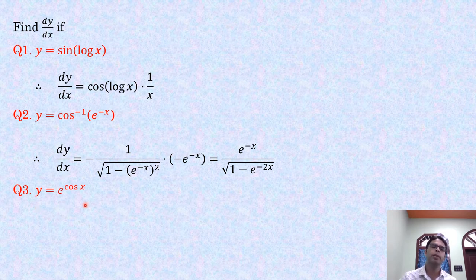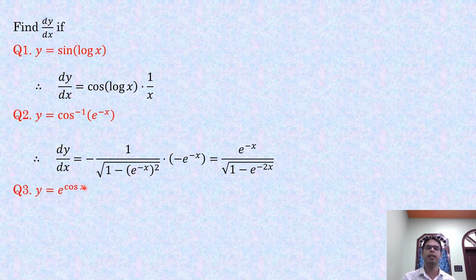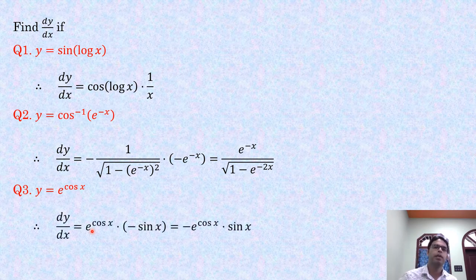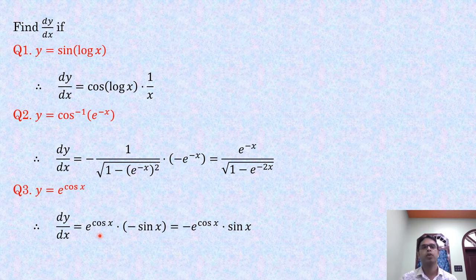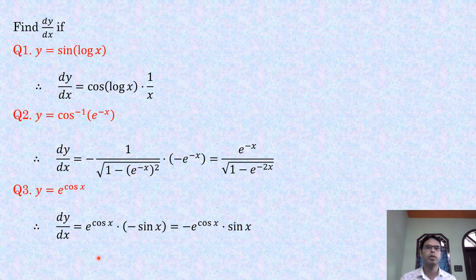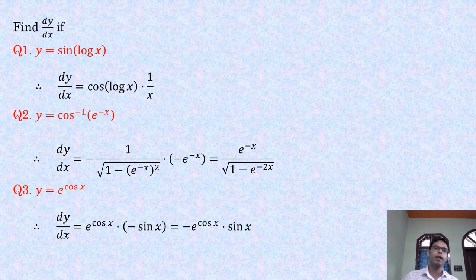Problem 3: y = e^(cos x). The derivative is e^(cos x) itself, multiplied by the derivative of cos x, which is −sin x. So dy/dx = −e^(cos x) · sin x.